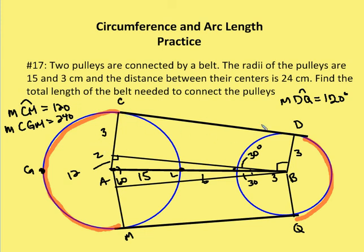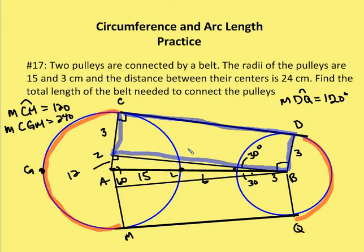Now I want to find the length of CD, which is the same length as ZB because of the rectangle CZBD. ZB is the side opposite the 60-degree angle. Since ZA is 12, ZB ends up being 12 root 3. So CD is 12 root 3. And since MQ has the same length as CD by the same rectangle, MQ is also 12 root 3. So we have our two tangent segment lengths — both are 12 root 3.